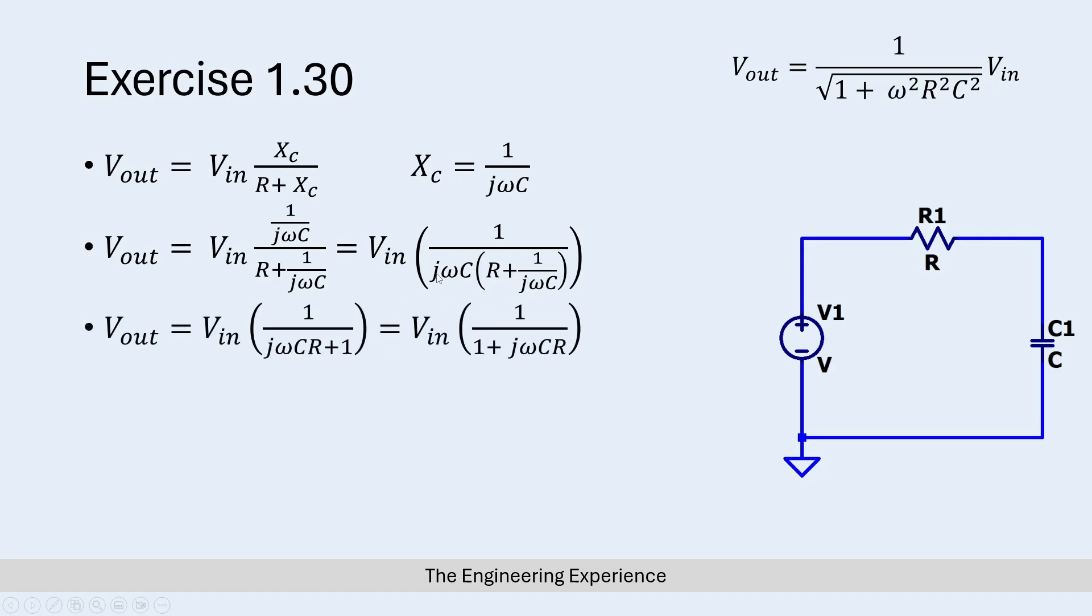That instance where you have jωCR would basically stay as jωCR. So now you get V_out equals V_in multiplied by 1 over jωCR plus 1. I've just rewritten it here because it's common form to write the imaginary section of the equation second.